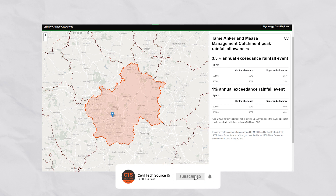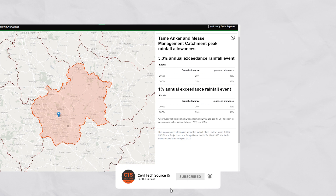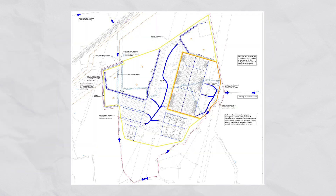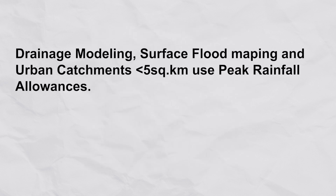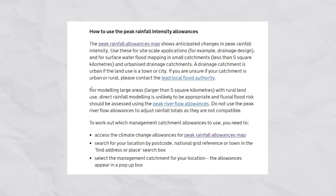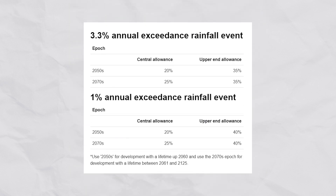The climate change peak rainfall allowances should be used for drainage design, surface water flooding mapping in small catchment areas less than 5 square kilometres, and urbanised drainage catchments. For large areas with rural land we should be using the peak river flow allowances, which we'll cover in another video.